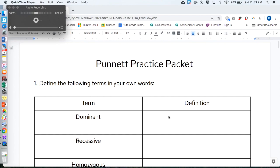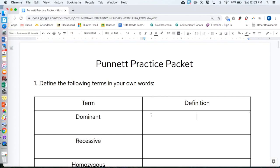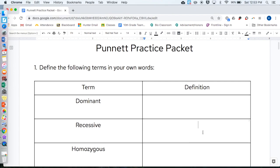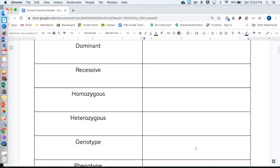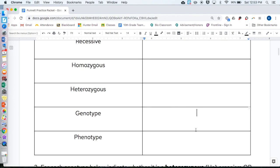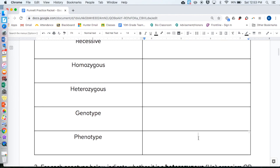Number one, for this table, you are going to define the following terms in your own words. The terms that you are going to define, it doesn't have to be a perfect science definition. It can be however you understand it or remember it. So, define dominant, like dominant trait, recessive, homozygous, heterozygous, genotype, and phenotype. Pause here before you go on or circle back to this.